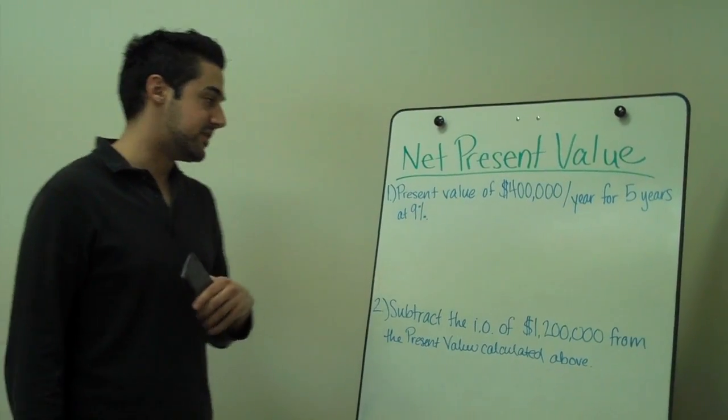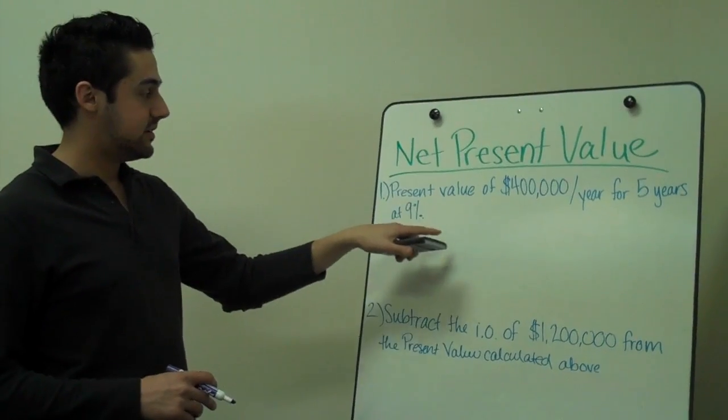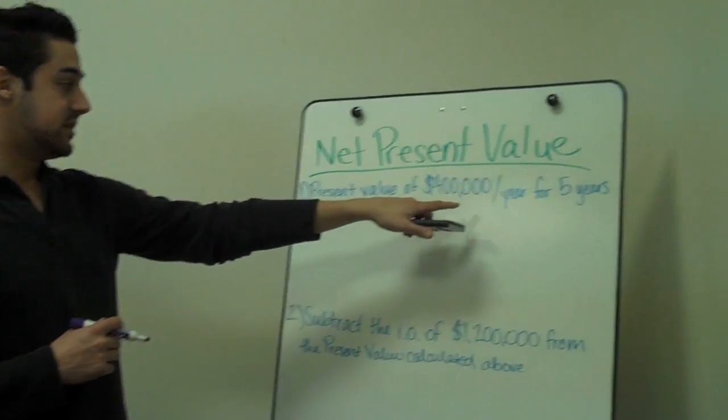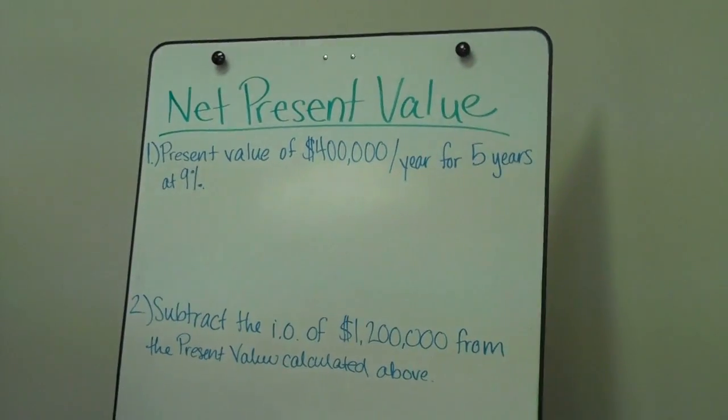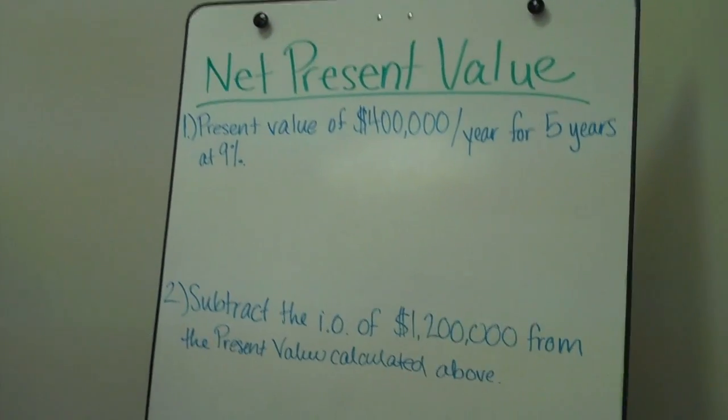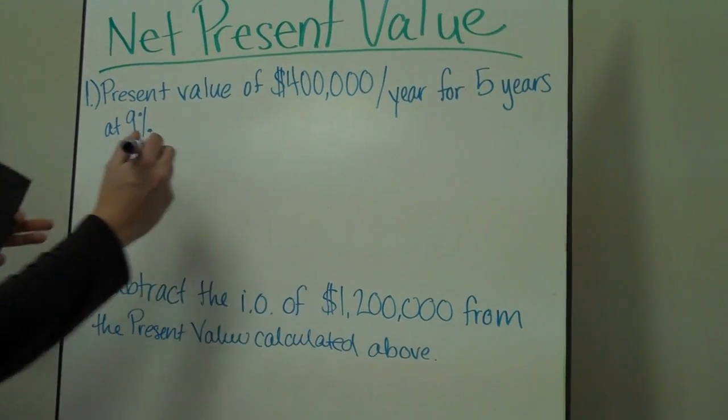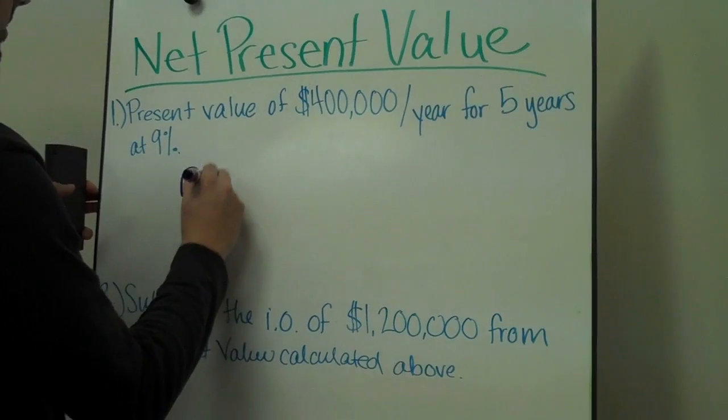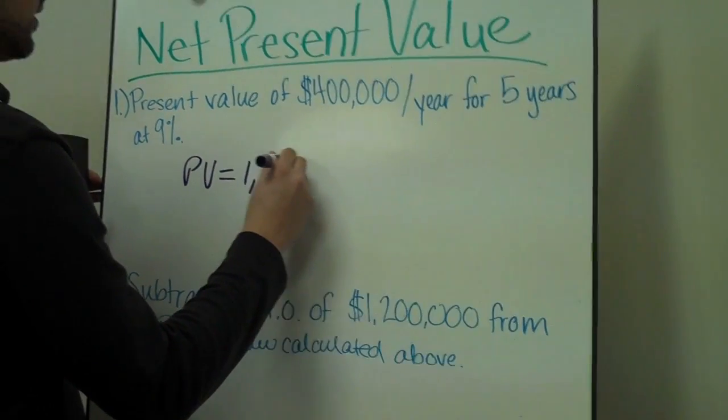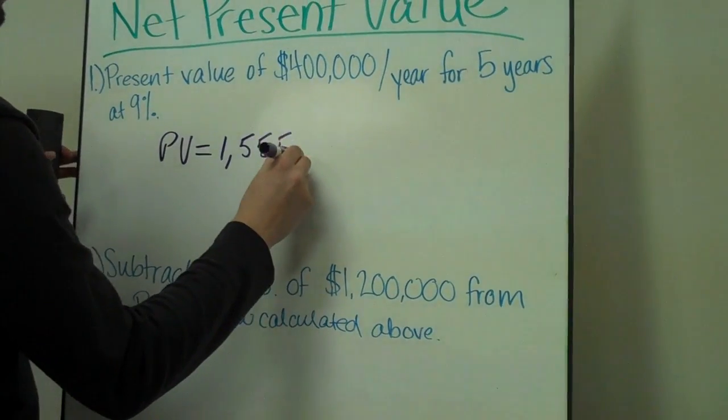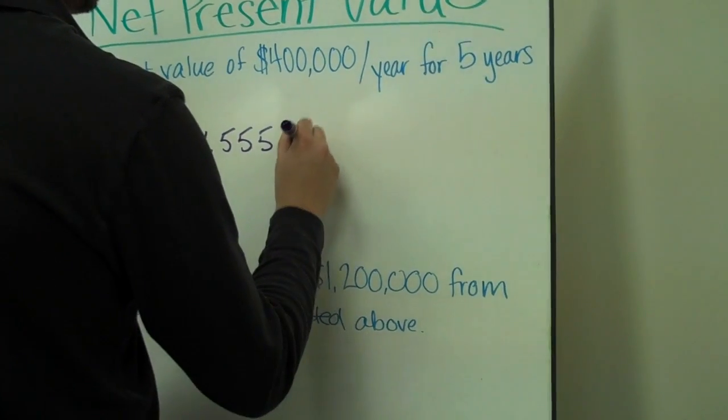For the first part, present value, we are going to have to find the present value of $400,000 per year for five years at a required rate of return of 9%. So when we put that in the calculator, it comes out to be $1,555,861.